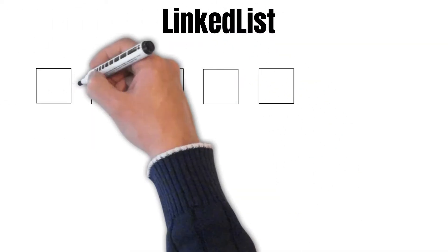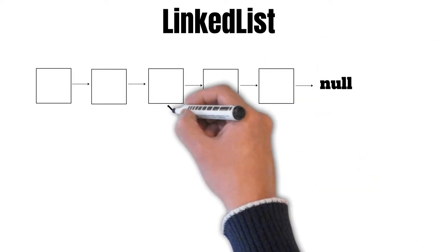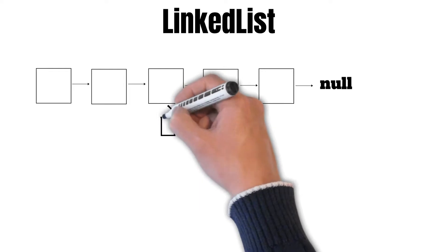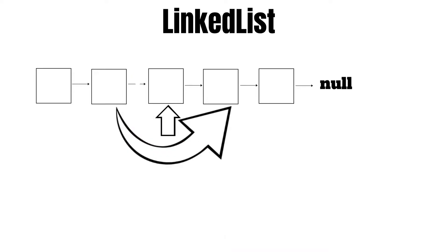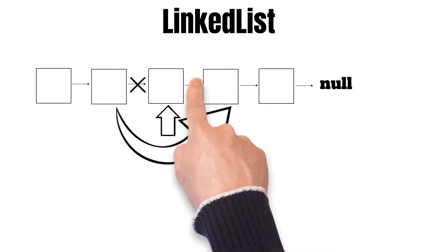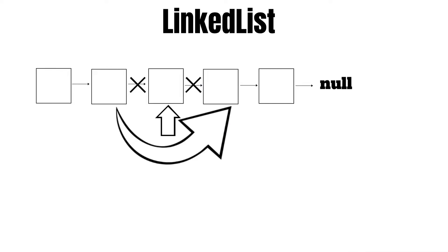A LinkedList, on the other hand, is implemented by blocks pointing to each other. If we want to delete the second element, we just need to change the pointer of the first element to the third element and remove the pointer of the second element. So just by changing the pointers, we can remove any element from a LinkedList. That's why LinkedList is suitable whenever we require removing or adding elements in between.